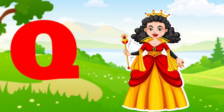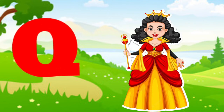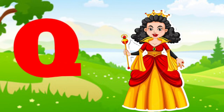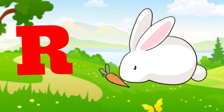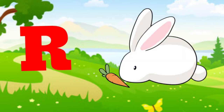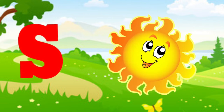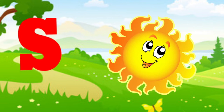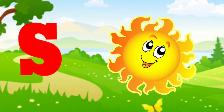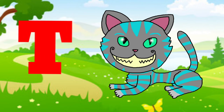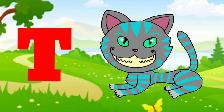Q is for queen, kw-kw-queen. R is for rabbit, r-r-rabbit. S is for sun, s-s-sun. T is for toad, t-t-toad.